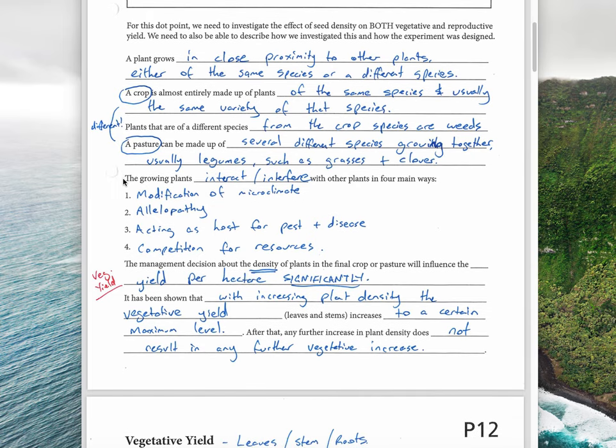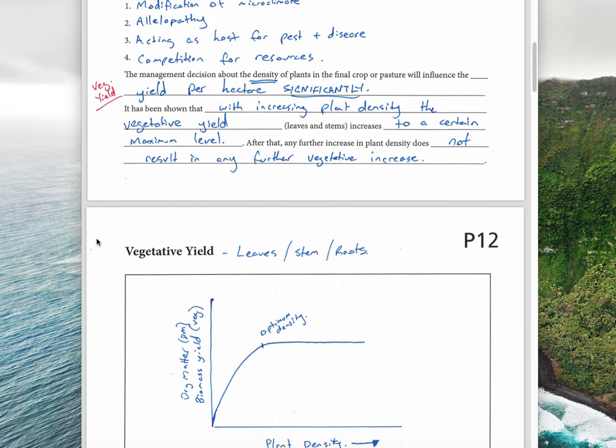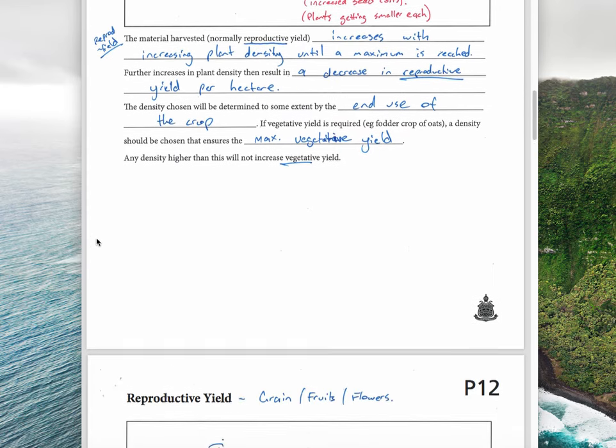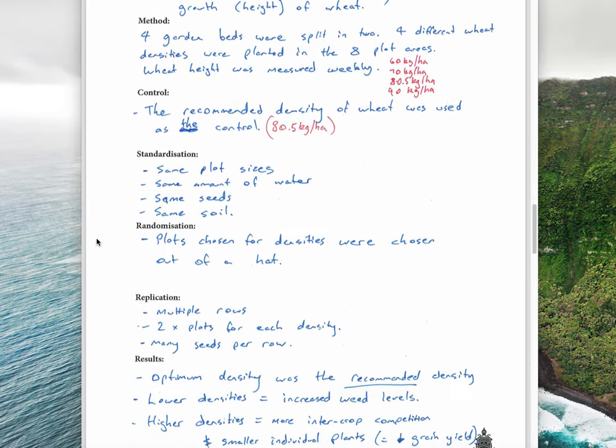Obviously, growing plants interfere and interact with each other in different ways: modification of microclimate, allelopathy, acting as a host of pest and disease, and competition for resources. We're going to look at vegetative yield and reproductive yield, then the experiment we did on density.